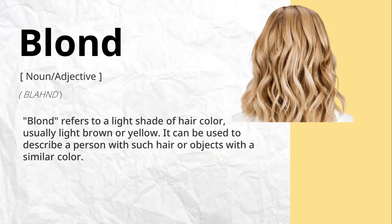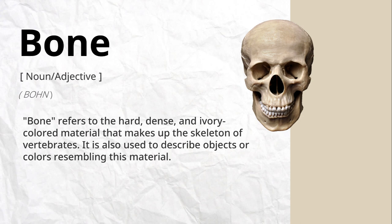Blonde refers to a light shade of hair color, usually light brown or yellow. It can be used to describe a person with such hair or objects with a similar color. Bone refers to the hard, dense, and ivory-colored material that makes up the skeleton of vertebrates. It is also used to describe objects or colors resembling this material.